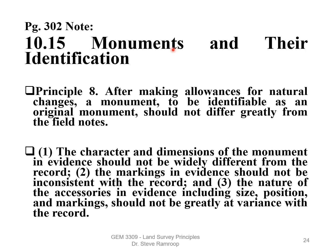Section 10.15, Monuments and Identification, page 297. Principle 8: After making allowances for natural changes, a monument to be identifiable as an original monument should not differ greatly from the original notes. All surveyors should realize that monuments set on corner points are like people — time affects each differently. These monuments can vary in character, and the dimensions of the monument and evidence should not be widely different from what is on record. The markings as evidence should not be inconsistent with what is on record, and the nature of the accessories such as bearing trees and their size and position should be consistent with what's on record.